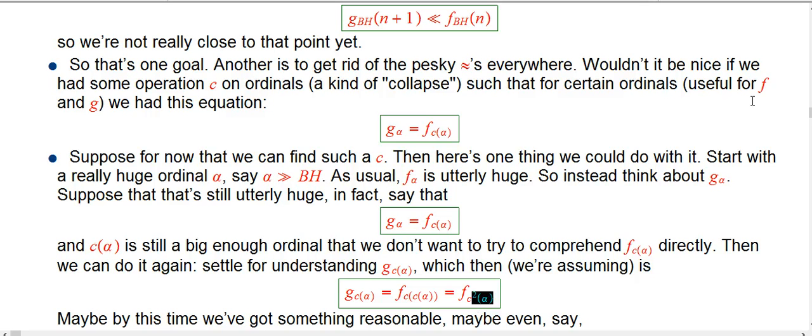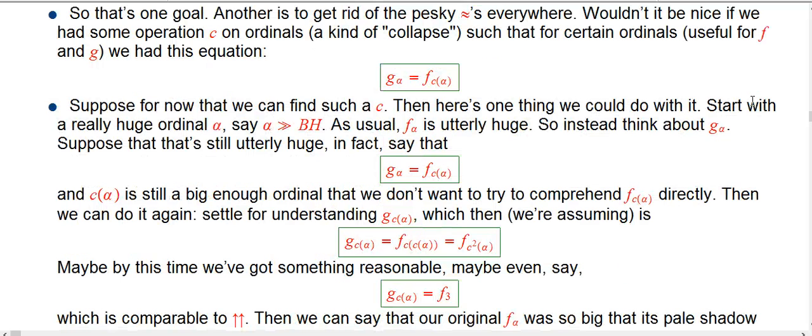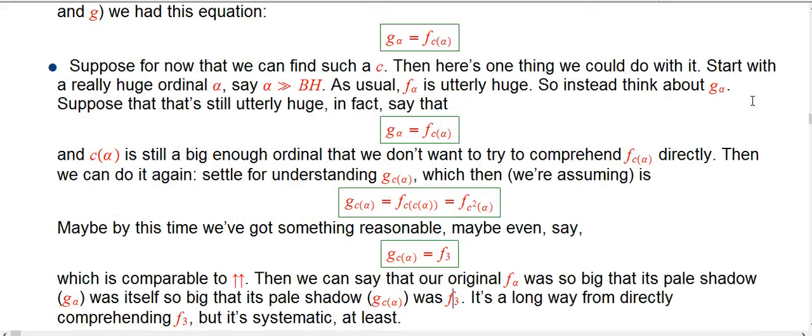And we get maybe something that this is not so unreasonable. So maybe we have something like this, where the g(c(α)) actually maybe is just like f₃, which if you go back to the original definition of the fast-growing hierarchy, that's like a double up arrow. It's like a Knuth double up arrow. So we would say in this case, our original f_α was this monster fast-growing function. Its pale shadow was super big, but its pale shadow was something that's actually not utterly ridiculous. It's something on the order of a Knuth double up.